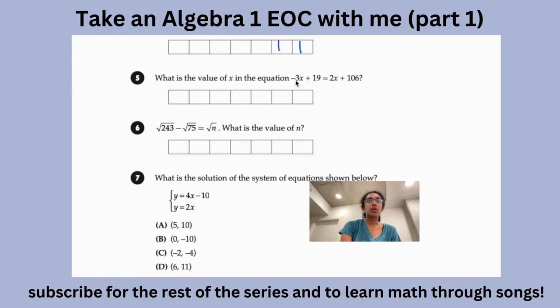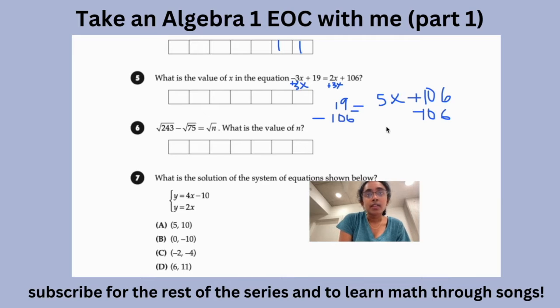Now this next one is what is the value of X in the equation -3X plus 19 equals 2X plus 106. So this is just a normal equation, right? So the first thing you would have to do is to isolate X. So we can easily do this by adding 3X to both sides. So then we have 19 equals 5X plus 106. So now we can just subtract 106 from both sides.